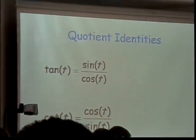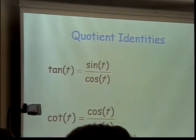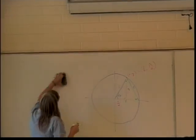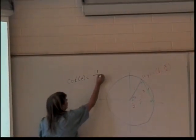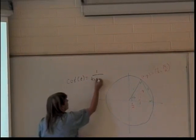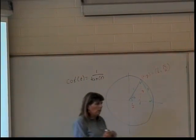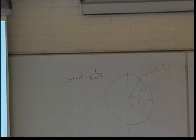So we could also say that the cotangent of an angle T is the same as 1 over the tangent of the angle T. That's equivalent to flipping that over. Your book will refer to that as a reciprocal identity if you look at your book.